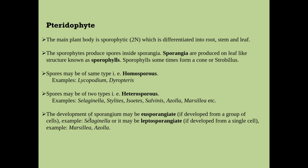The development of the sporangium may be eusporangiate — if it develops from a group of cells, then this type of development is known as eusporangiate, for example in Selaginella. But if the sporangium develops from a single cell, then it is known as leptosporangiate, for example in Marsilea and Azolla.